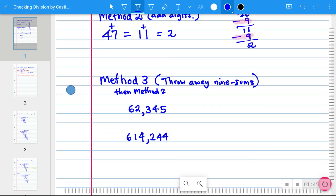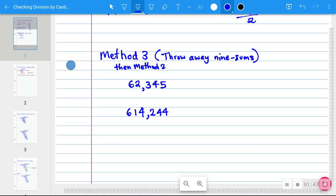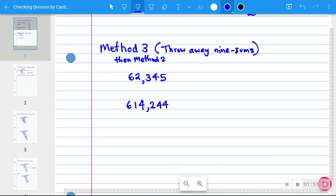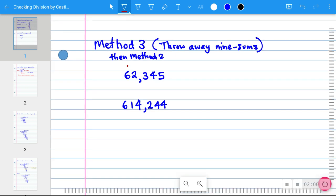You can take a shortcut. And this is important to know. And I call it method 3, but it's just a jump start on method 2. Any combination of digits that adds up to 9, for instance, in this first problem, 6 and 3 add up to 9, can be ignored. So we're going to ignore the 6 and the 3. Likewise, 5 and 4 add up to 9, so they can be ignored. So if you took the trouble to subtract all of the 9's out of 62,345, you would end up with 2. The casted 9's version of that long number is just 2. You could also say the remainder when you divide by 9 is 2.